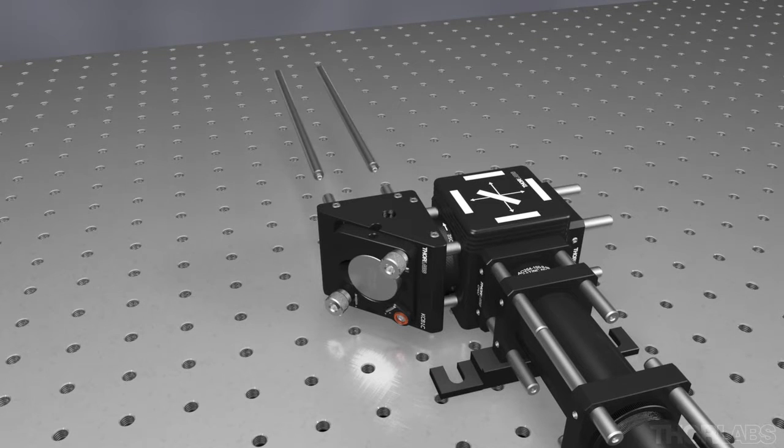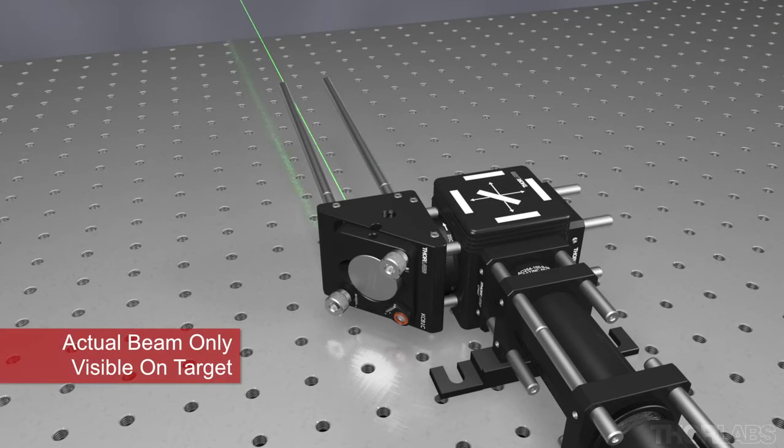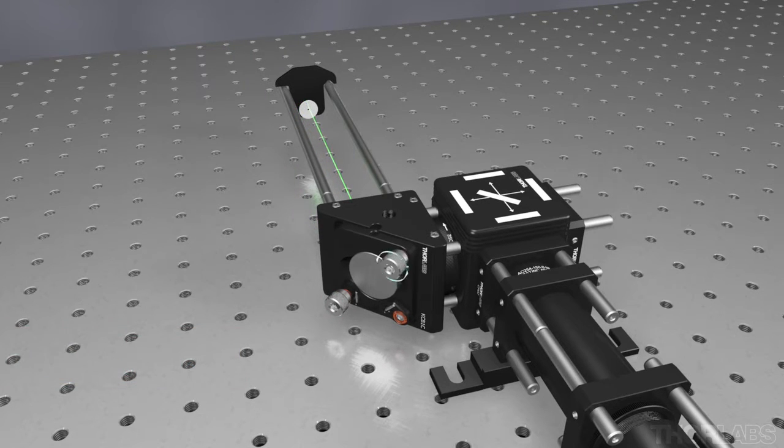Finally, check the centration through the exit of the beam expander module. Again, place the target on the ER rods and, using the knobs on the final mirror, center the beam on the target.